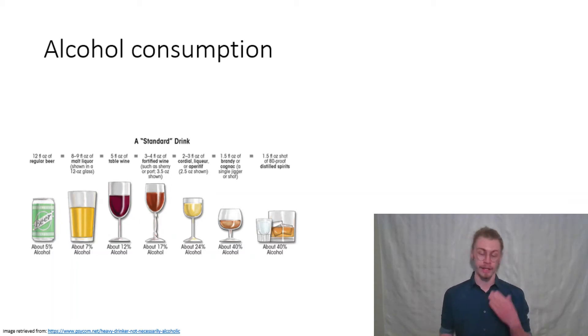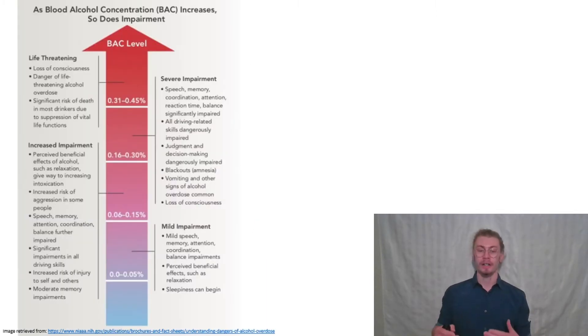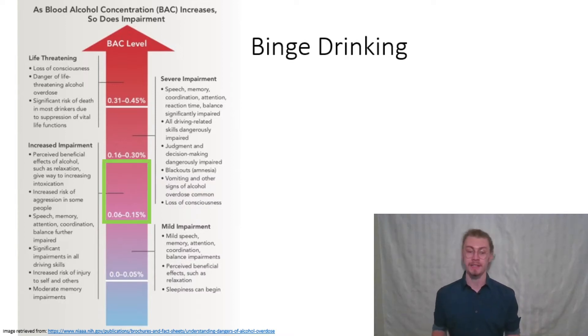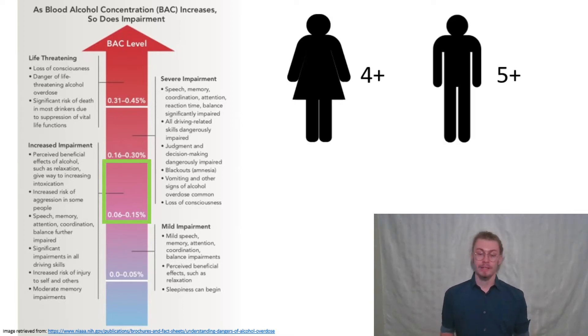The more you drink, the more impaired or inebriated you feel. This is a result of your blood alcohol concentration going up. Blood alcohol concentration is a measure of grams of ethanol per deciliter of blood in your system. Binge alcohol consumption is considered to be in the range of 0.06 to 0.15% blood alcohol concentration, whereas the legal limit for impaired driving is 0.08 in Canada. To get to this level is different for men and women typically. For women it takes four or more drinks, whereas for men it takes typically five or more drinks to get to this level of intoxication.